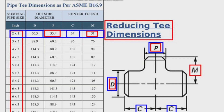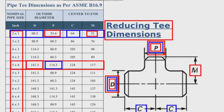Let's look at the next reducing tee dimensions. For example, a 5x4 inch tee has two different outside diameters: the main side is 141.3 millimeters and the branch side is 114.3 millimeters. Reducing tees also have two types of center-to-end dimensions: C is 124 millimeters and M is 117 millimeters.